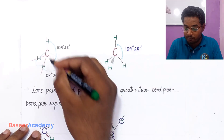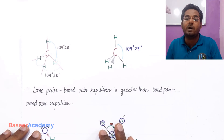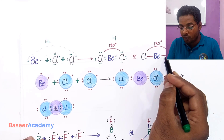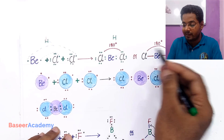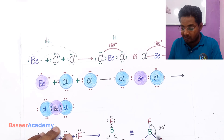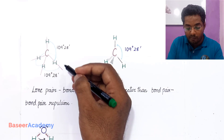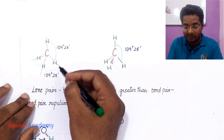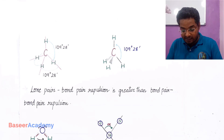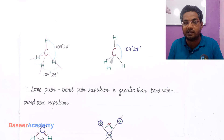If the central atom has four covalent bonds, the bond angle has to be 109°28'. To summarize: if the central atom has two covalent bonds and no lone pairs, the bond angle is 180°; if three bond pairs, 120°; if four bond pairs and no lone pairs, 109°28'. If the central atom has a lone pair, the bond angle further decreases.